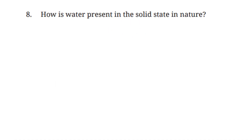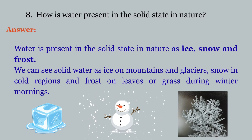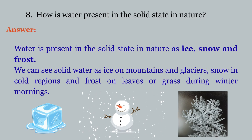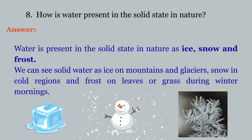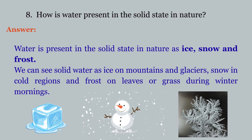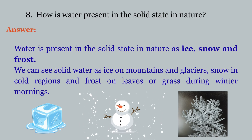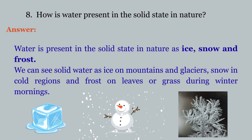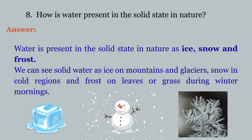Question number eight: how is water present in the solid state in nature? Water is present in the solid state in nature as ice, snow, and frost. We can see solid water as ice on mountains and glaciers, snow in cold regions, and frost on leaves or grass during winter mornings.